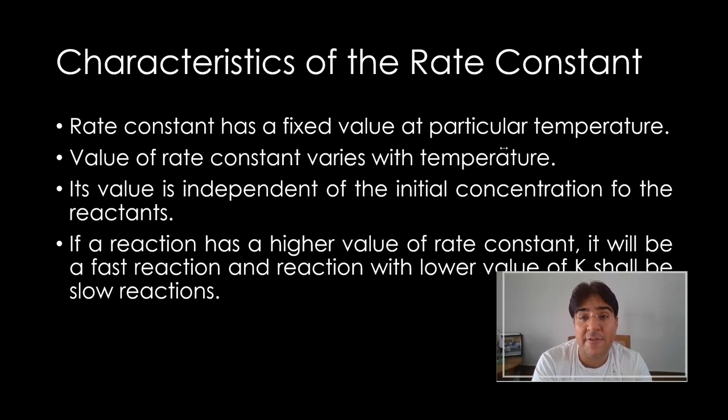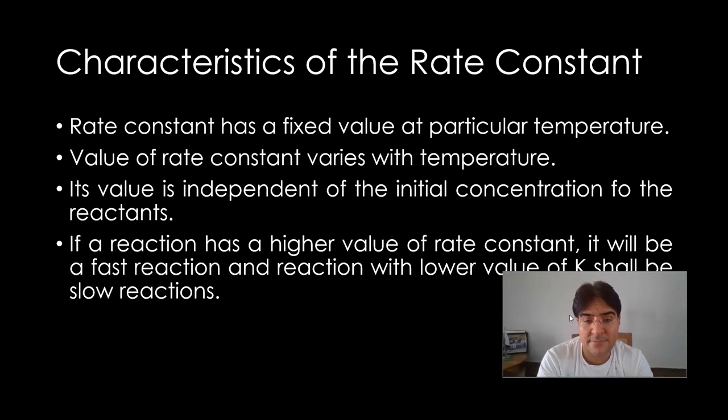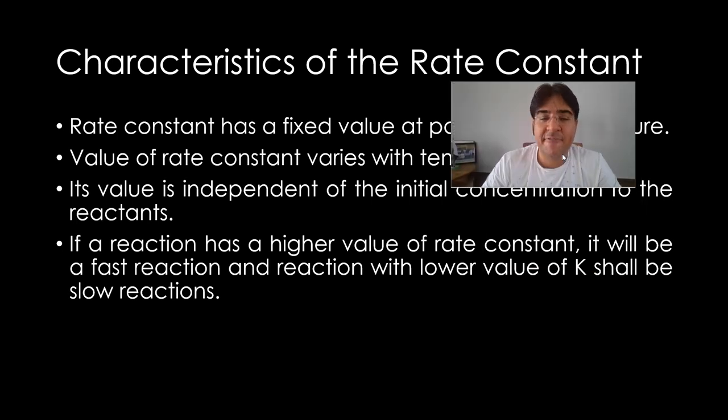But if you have a high value of K for any reaction, let's say one reaction has a value of K 100. Why is 100? Because the dx/dt is much bigger than the concentration. So bigger value of K shows you a faster rate and a smaller value of K shows you a slower rate.